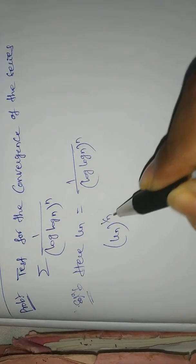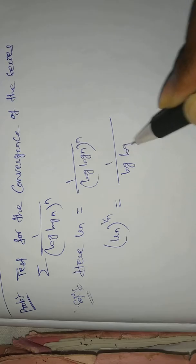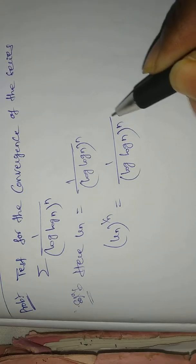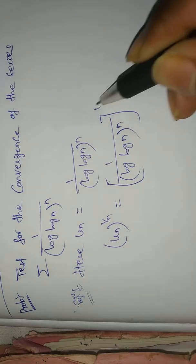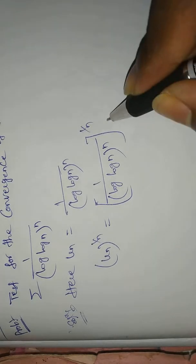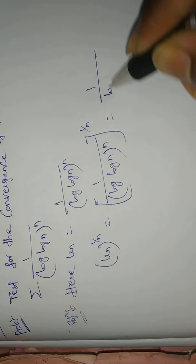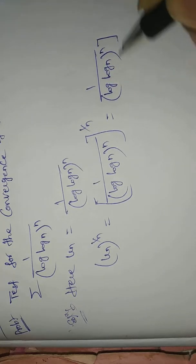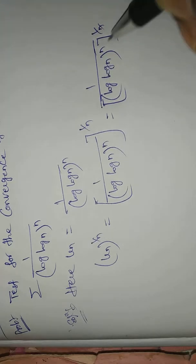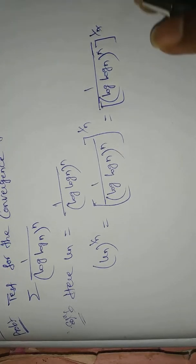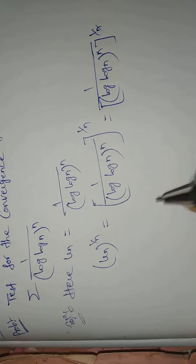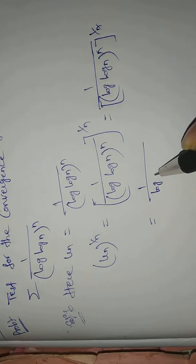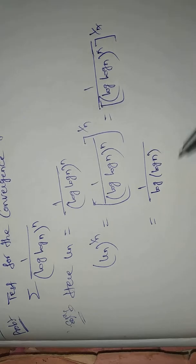u_n to the power of 1/n equals [1 by (log(log n))^n] to the power of 1/n. The powers multiply and the n cancels, giving u_n^(1/n) = 1 by log(log n).